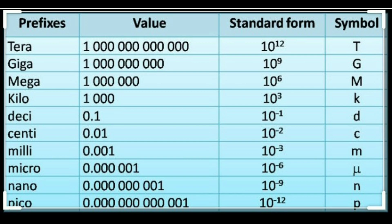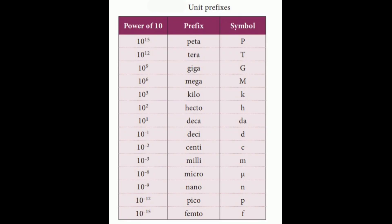Some unit prefixes: 10^15 peta (P), 10^12 tera (T), 10^9 giga (G), 10^6 mega (M), 10^3 kilo (k), 10^2 hecto (h), 10^1 deca (da), 10^-1 deci (d), 10^-2 centi (c), 10^-3 milli (m), 10^-6 micro (μ), 10^-9 nano (n), 10^-12 pico (p), 10^-15 femto (f).